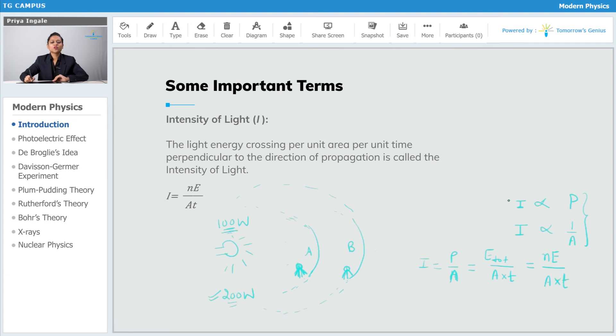So, this will be your final expression for intensity of light. If you know the number of photons traveling through that area, the energy of each photon, the area, and the time for which that energy is passing through that area, you will be able to calculate the intensity of that light. As you can see, the formula for intensity is nE divided by A times t.